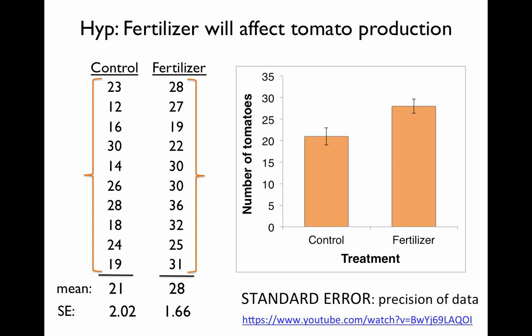Looking at our graph, we can see that even though there is some variation in tomato number within each treatment — above and below the mean for both control and fertilizer — the magnitude of that variation is pretty small compared to the magnitude of the difference between the averages of our two treatments. This confirms the result from our statistical test, which found a significant difference between our treatments.